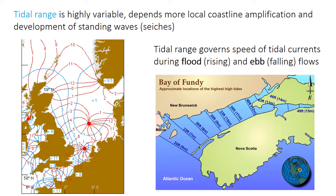The tidal range, which is the elevation difference between low and high tide, varies considerably around the world, strongly driven by local coastline shape, which may amplify the tidal wave, or allow standing waves, or seiches, to develop. The map on the left shows the tidal range in northwestern Europe, ranging from less than a meter in parts of Norway and Denmark to maybe 8 or even 11 meters in parts of Britain or France. The Bay of Fundy in Atlantic Canada is famous for having the largest tidal range in the world, up to 15 meters.